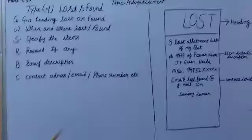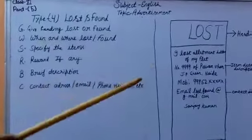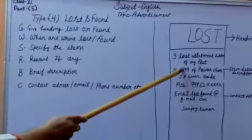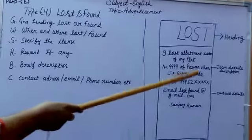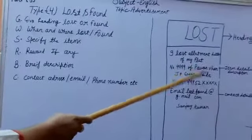I lost allotment letter of my flat number 999 of Pawanmihar, J.P. Green, Noida. And this is the item details description.